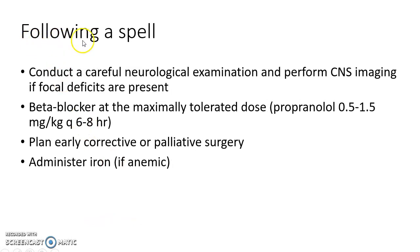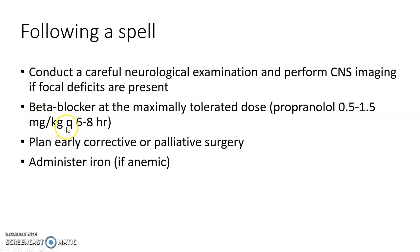Following a cyanotic spell, conduct a careful neurological examination and perform CNS imaging if focal deficits are present. Initiate beta blockers at the maximally tolerated dose — propranolol at 0.5 to 1.5 mg/kg every 6 to 8 hours. Plan early corrective or palliative surgery, and administer iron if the child is anemic.